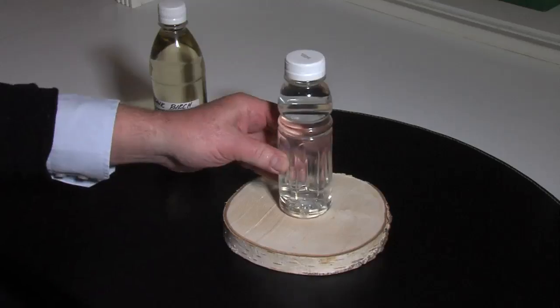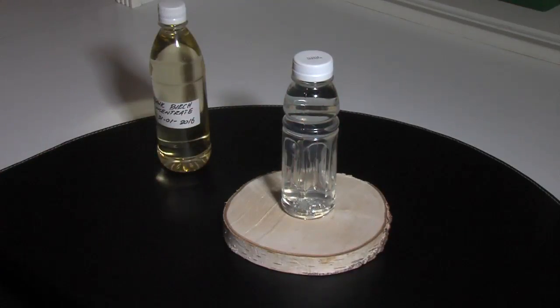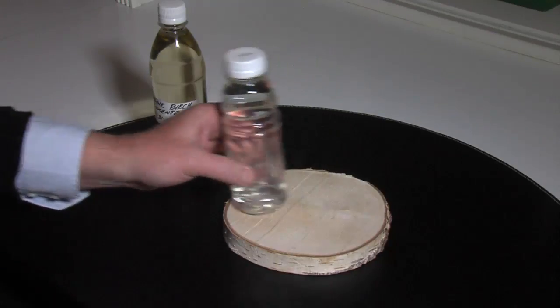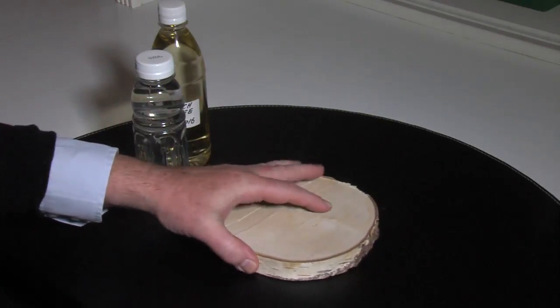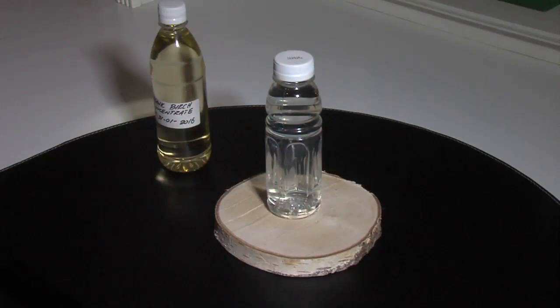This is an explanation of how we make the best organic birch water. We tap the birch tree by drilling a hole and tapping it for the liquid into a big tank. From that tank, we take some of the liquid out.